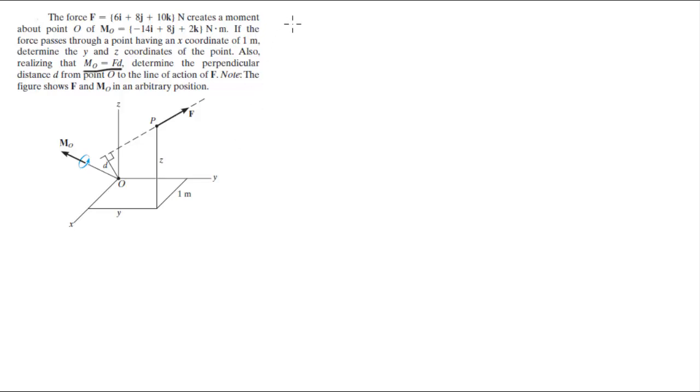So, F sits at 6 in the i, plus 8 in the j, plus 10 in the k. The moment that it creates about O is given at negative 14 in the i, plus 8 in the j, plus 2 in the k. And they tell you that the point P sits at 1 in the i, plus py in the j, plus pz in the k. And they want you to find these two points.